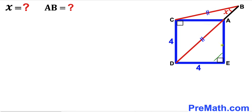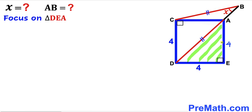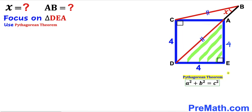Let's focus on blue square CDEA. We know all its side lengths are equal, so each side is 4 units. Now we're going to focus on right triangle DEA and apply the Pythagorean theorem. The hypotenuse of this triangle is diagonal DA, and our two legs are 4 and 4.